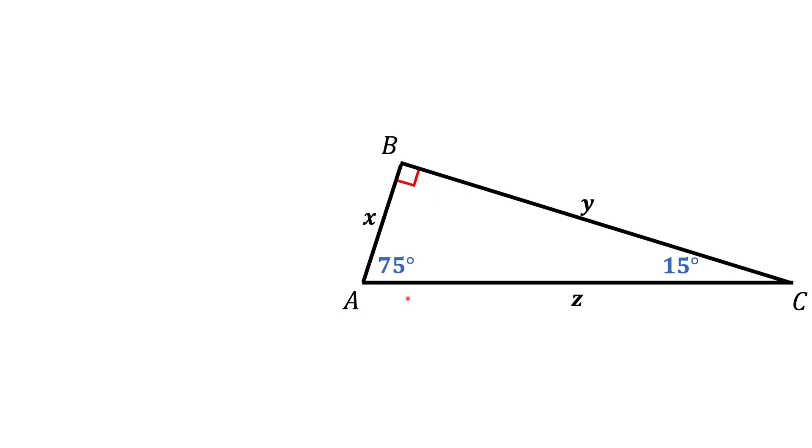In the last video, we took a right triangle for 18 and 72 degrees and reflected it over the side BC. Let's try to do the same thing here and see if it works.